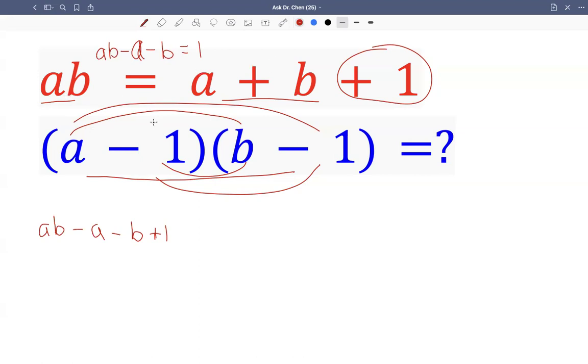So basically AB and A plus B differ by one. So I have here AB minus A minus B, that's one. So one plus one, that's two.